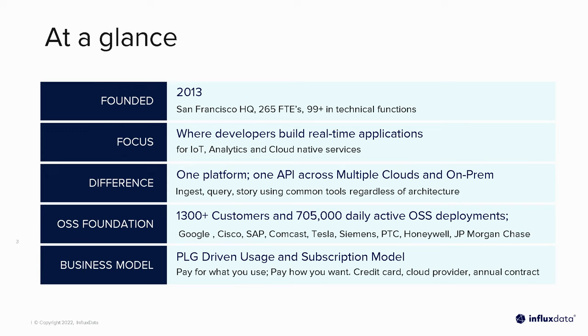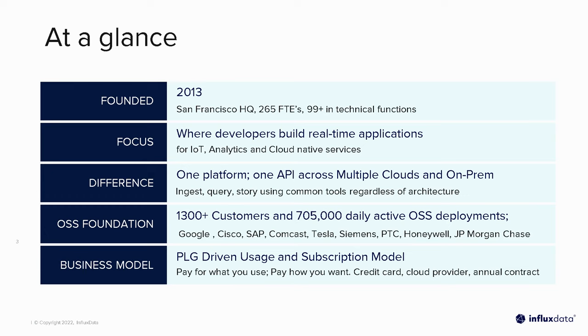I come from InfluxData, and if you didn't know, InfluxData are the founders and creators of InfluxDB, the open-source time series database. Our open-source project has 705,000 deployments in the wild, so you can see people are using it daily, and we get updated daily on their use cases — an incredible experience when we look at our online community. We also have big customers including Google, Cisco, Tesla, Siemens, and PTC, all using the InfluxDB product.